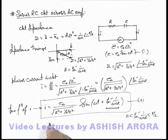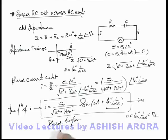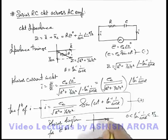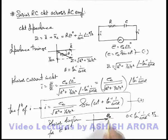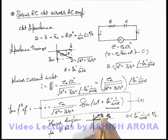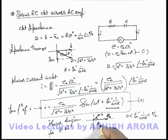We can also draw the phasor diagram for the EMF and current phasors. The EMF is always at angle zero degree with amplitude e-not. The current phasor I-not is ahead by angle theta, given by tan-inverse of 1 by omega-C-R.